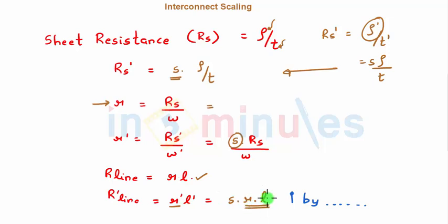So R' line increases by a factor of s when I scale down my thickness of my interconnect and when I scale my oxide thickness.